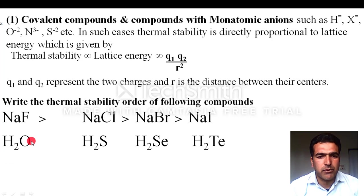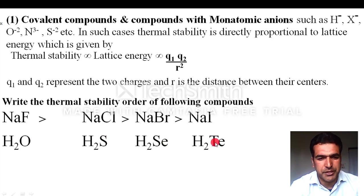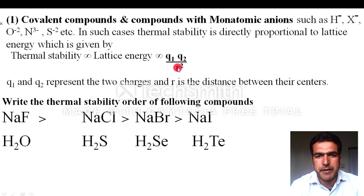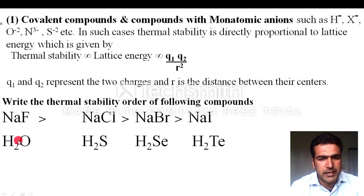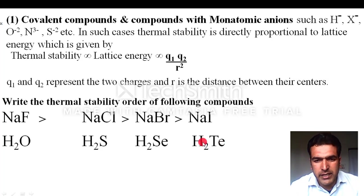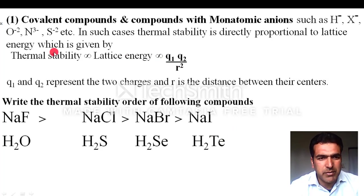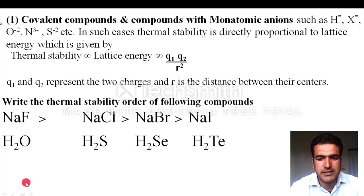Similarly, for covalent compounds — for example, the hydrides of the oxygen family: water, H2S, H2Se, H2Te — thermal stability depends on bond length. As the size of the central atom increases from oxygen to tellurium, the bond length increases. Greater bond length means weaker bond, which means lower thermal stability. So the order is: H2O > H2S > H2Se > H2Te.